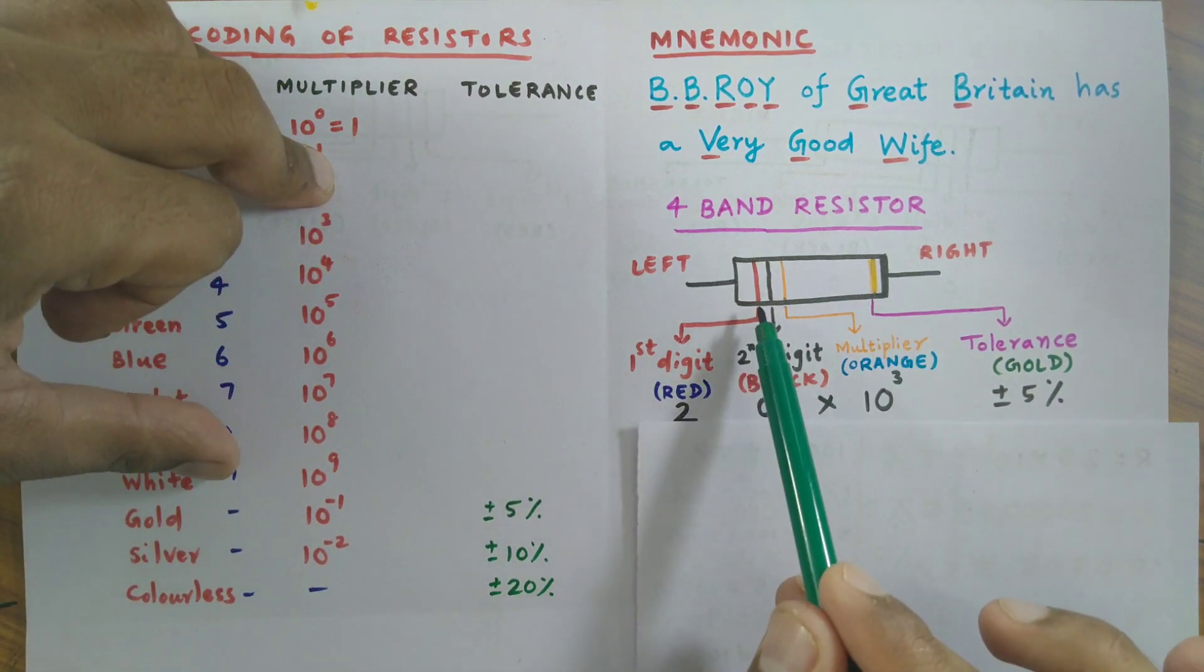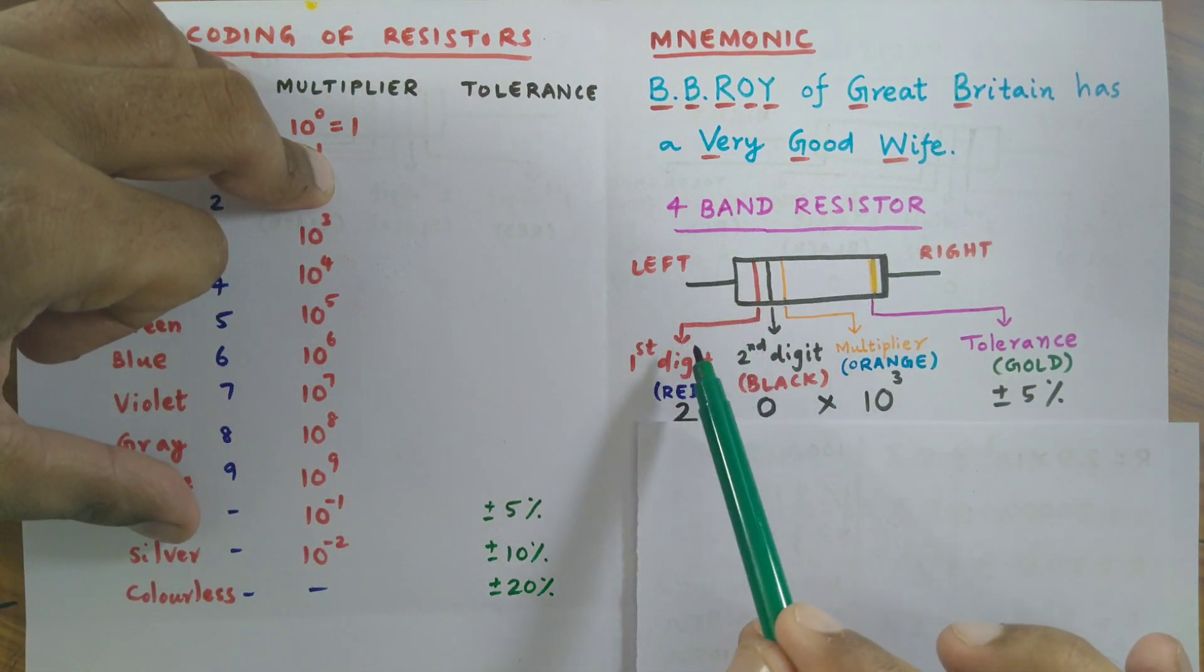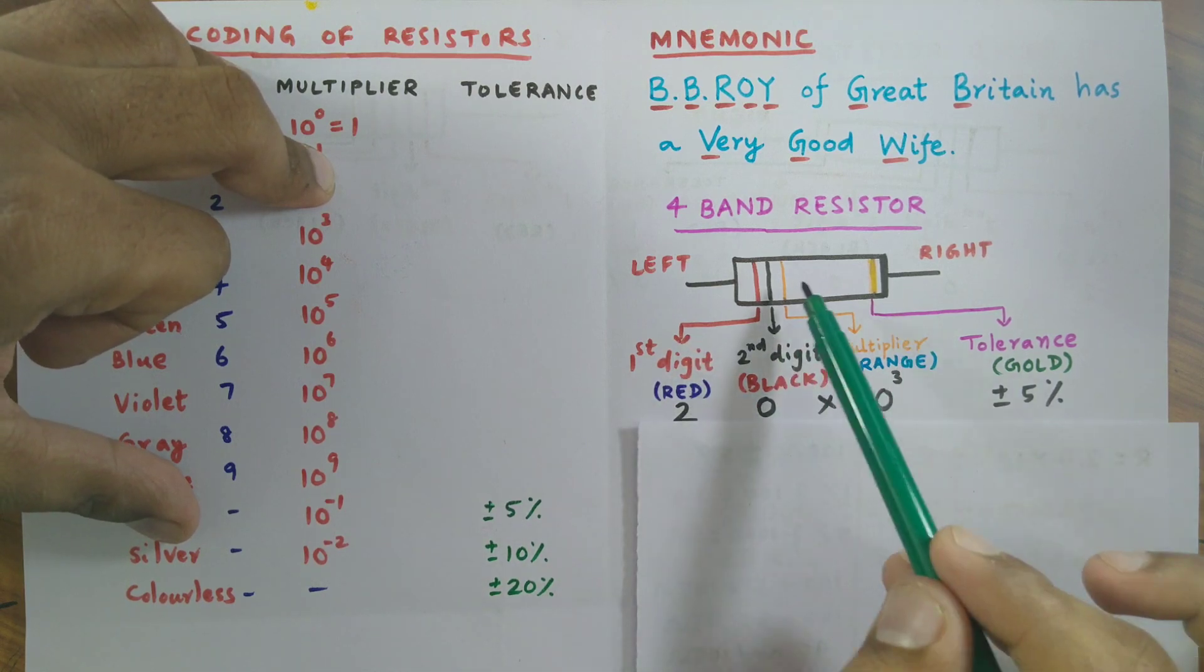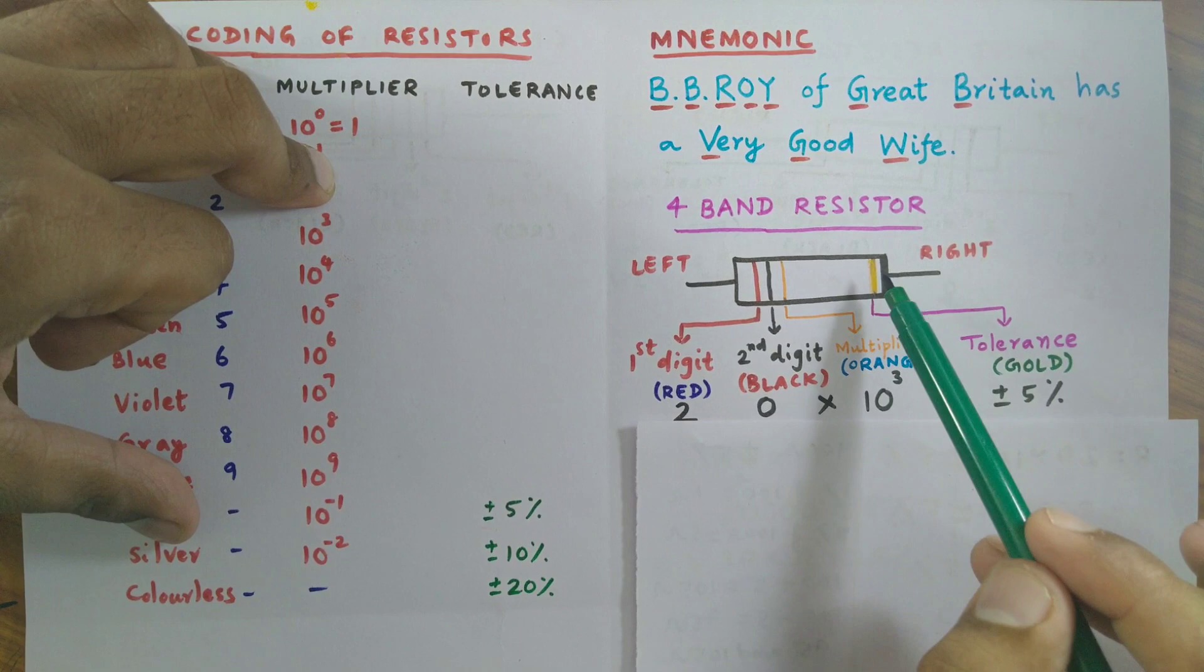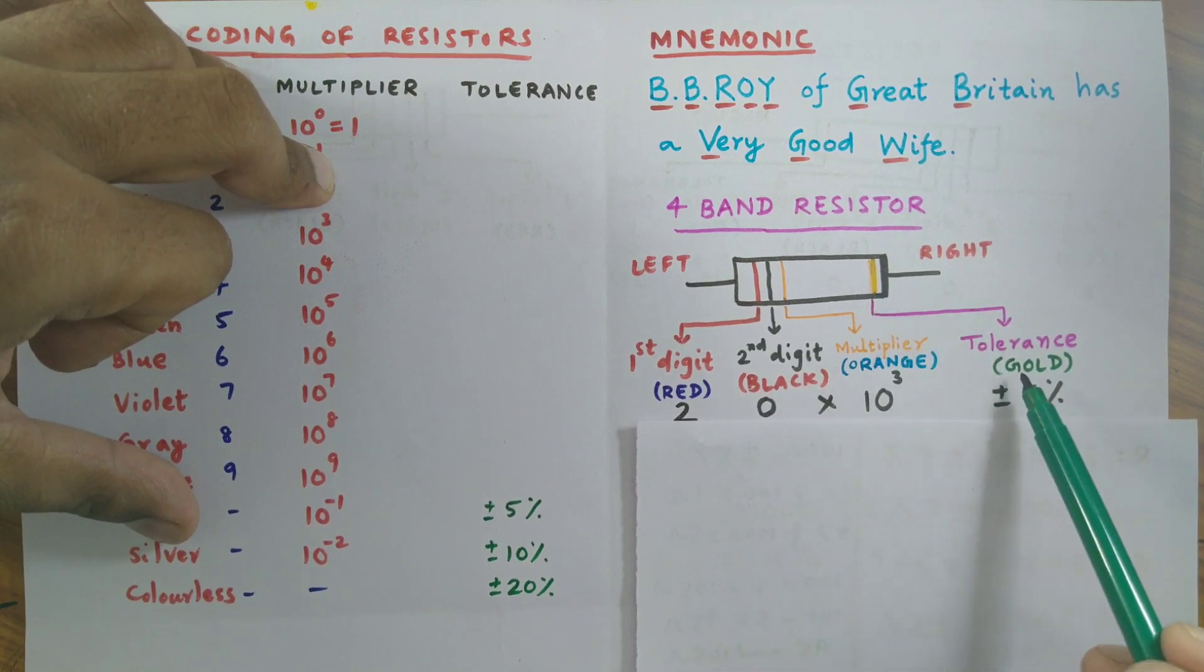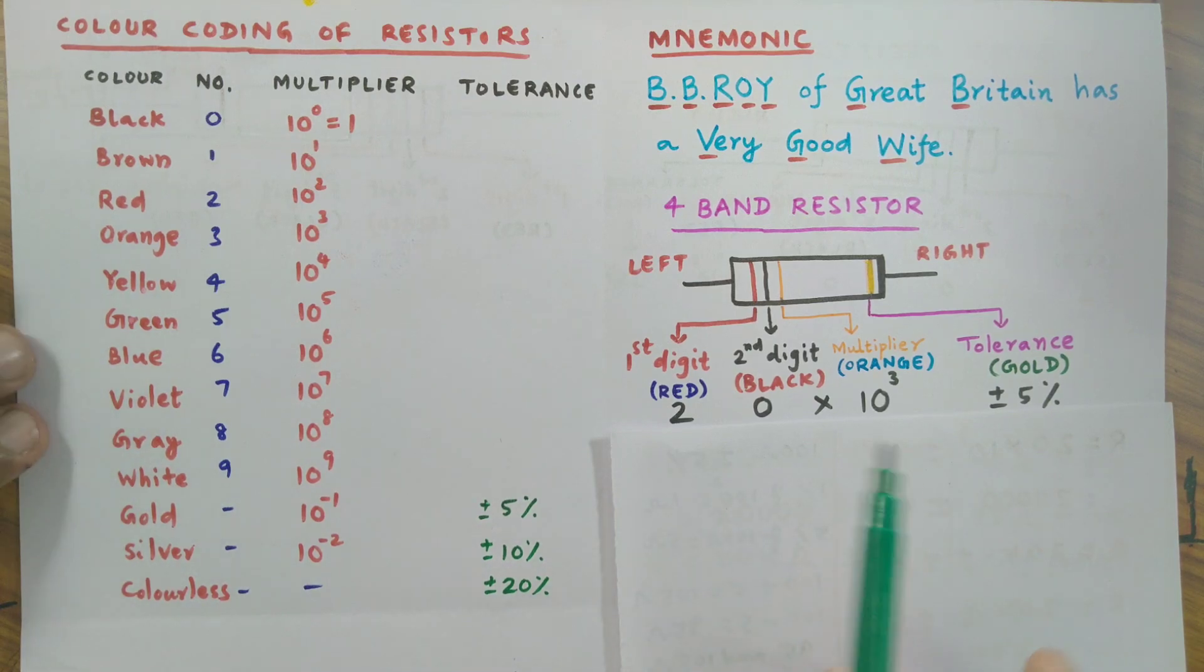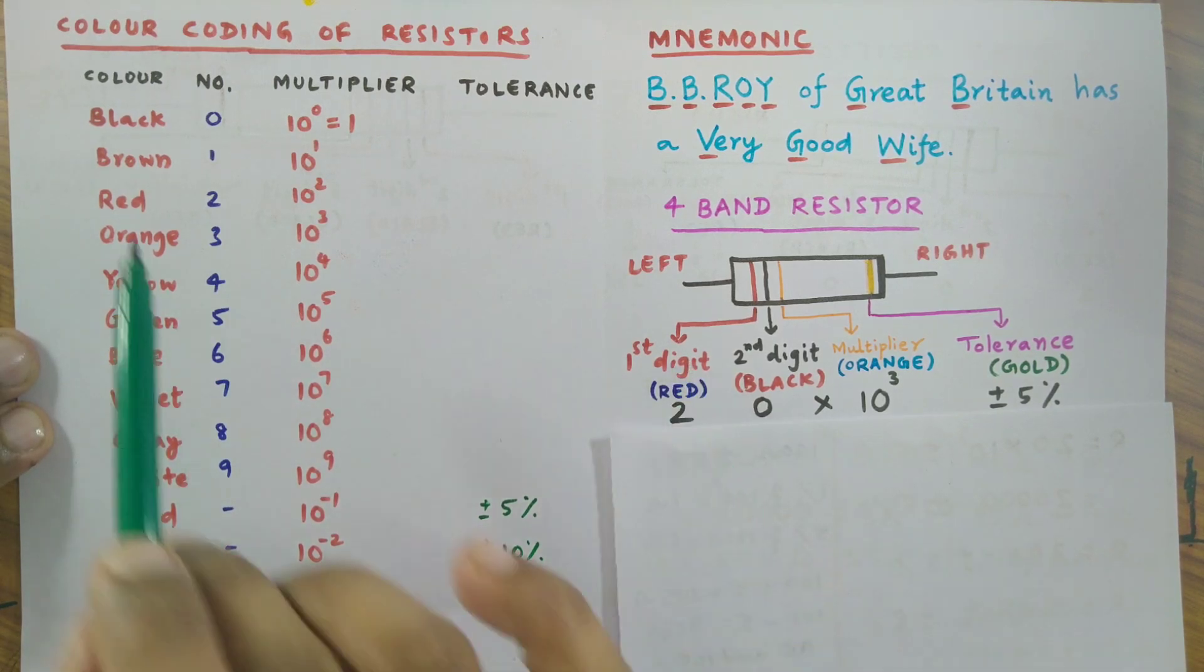Here I have a diagram. In this diagram I have taken the first ring as red in color, the second ring as black in color, the third ring orange in color, and the fourth ring golden color. All these colors have a particular value. Red represents two.